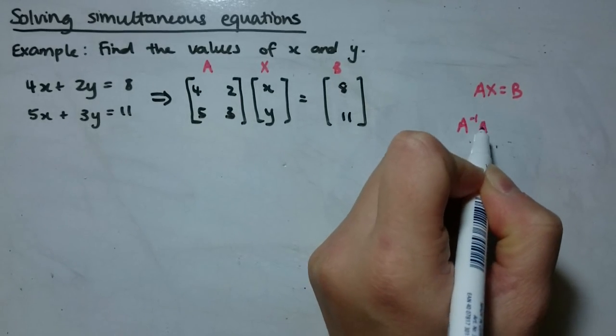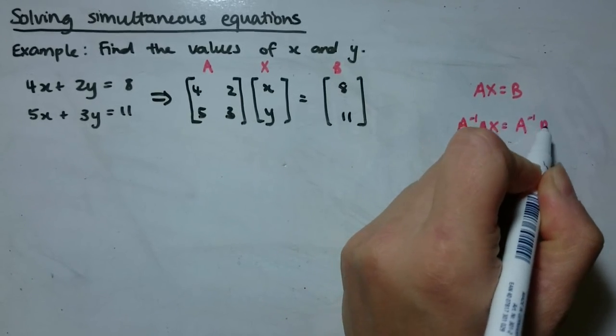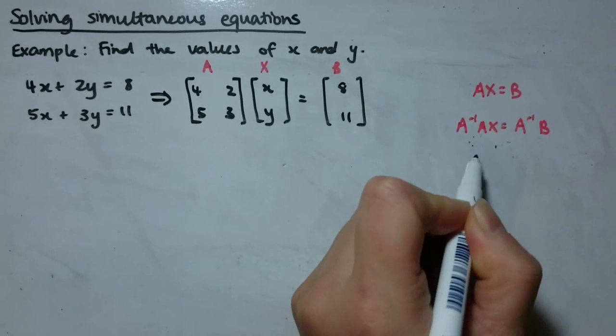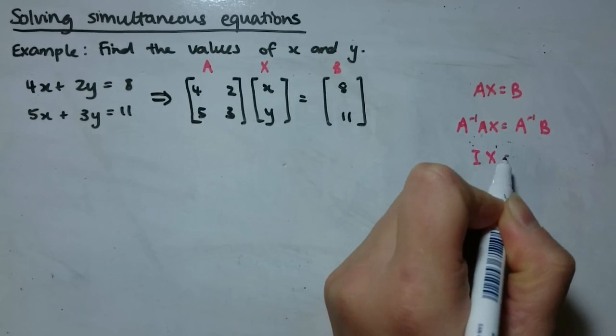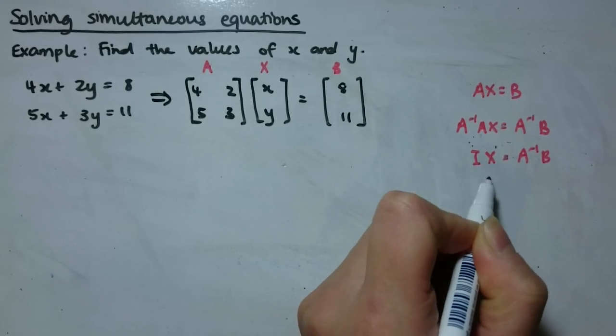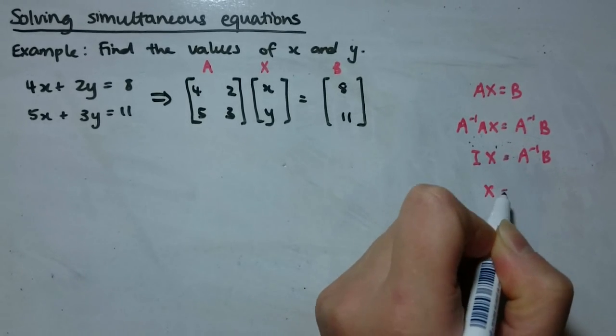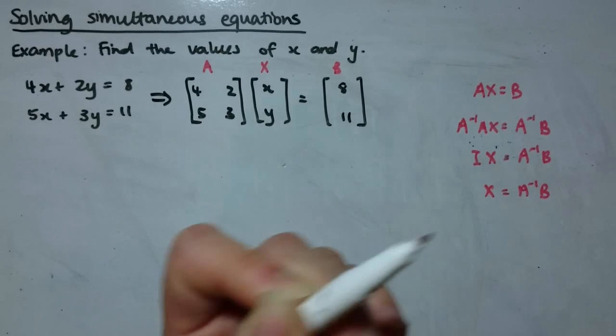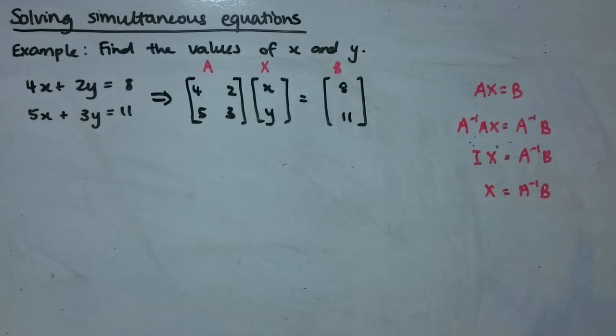And remember, pre-multiplication by the inverse. A inverse times A is just the identity, and the identity times anything is just X. So we get that. That's what we're looking for here.